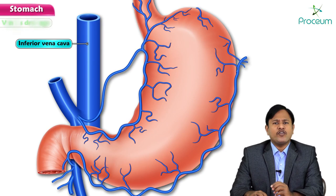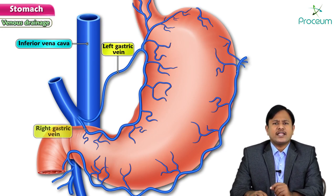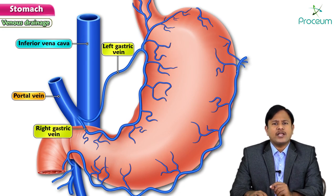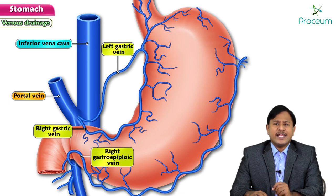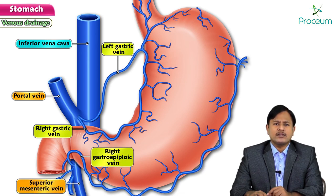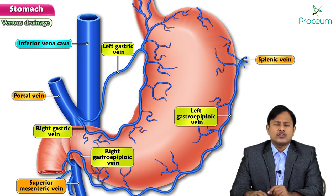Regarding venous drainage, the left gastric and right gastric veins drain into the portal vein. The right gastroepiploic vein drains into the superior mesenteric vein, and the left gastroepiploic vein drains into the splenic vein.